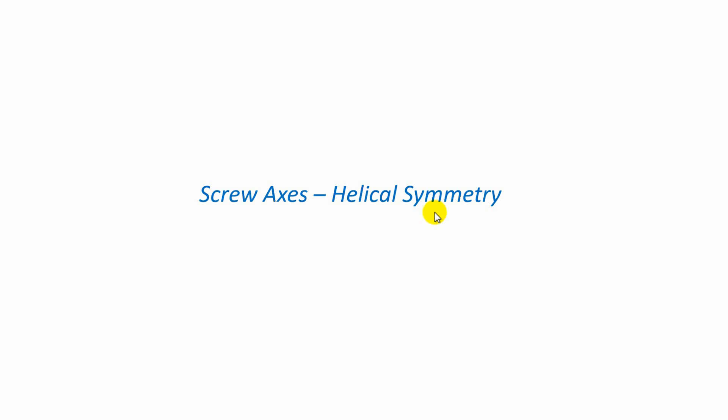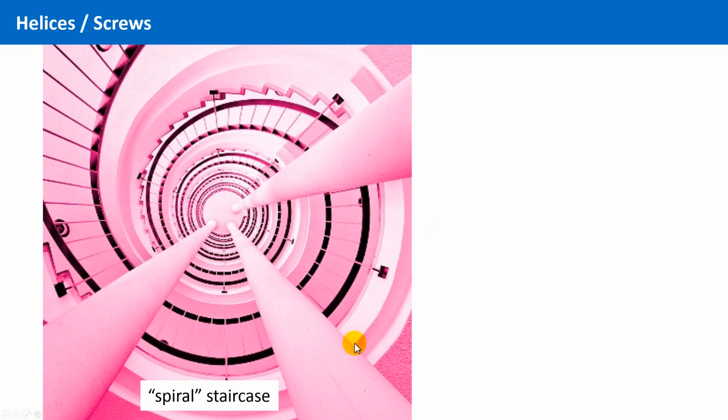Of course, we can find helical objects in many different areas, not only in crystals. For instance, in architecture. Here we see a beautiful picture of a spiral staircase. Interestingly, as a short side note, the English language is a bit sloppy in this case. A spiral is an object with a gradually changing diameter, while a helix has a constant diameter. This means it should rather be called a helical staircase.